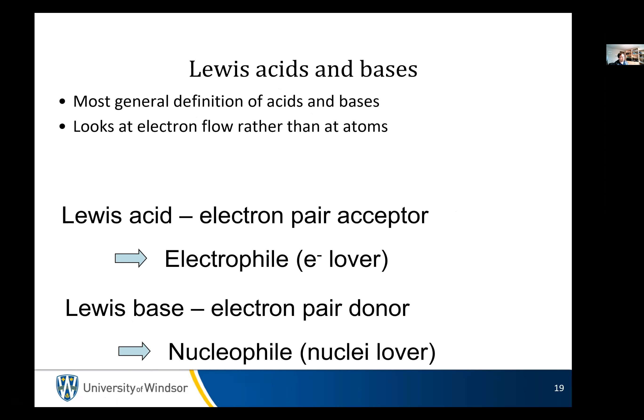A Lewis acid is an electron pair acceptor — anything that can accept a pair of electrons. We can call these electrophiles because they are electron lovers. A Lewis base is an electron pair donor, which means it has a lone pair. We call these nucleophiles — nucleus lovers.